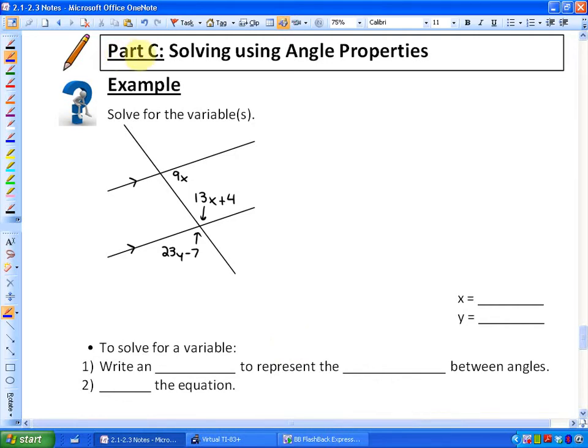In this lesson, we're going to solve using angle properties, and more specifically, we're going to use parallel line properties since these two lines are parallel to each other as indicated by the arrows on them to solve for variables. A little bit of algebra is going to come into play here.